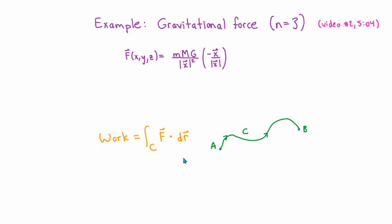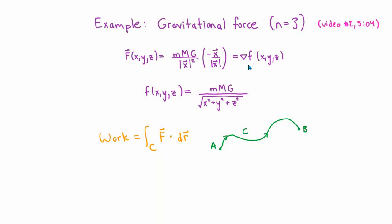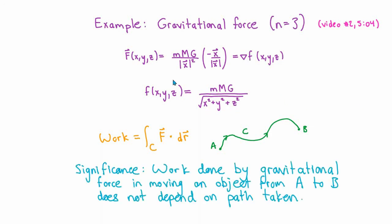If we want to do this directly using the work integral, we need to parametrize the curve and use the definition of the line integral of the third kind. However, we can also notice that the gravitational field is a conservative force — it's the gradient of the scalar field f = mMG / √(x² + y² + z²). This means the work done doesn't depend on the path taken; we can evaluate the work integral just by evaluating this scalar field at the endpoints and subtracting. You might have learned something like this in physics, but here's the mathematical justification.